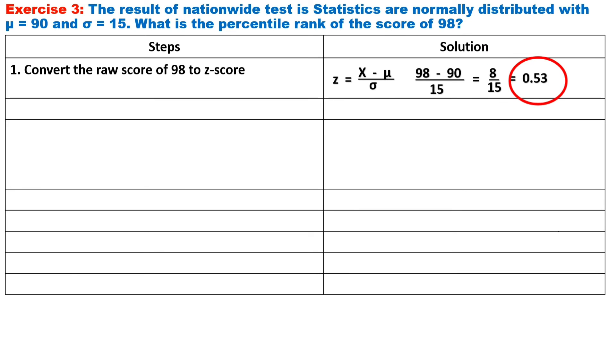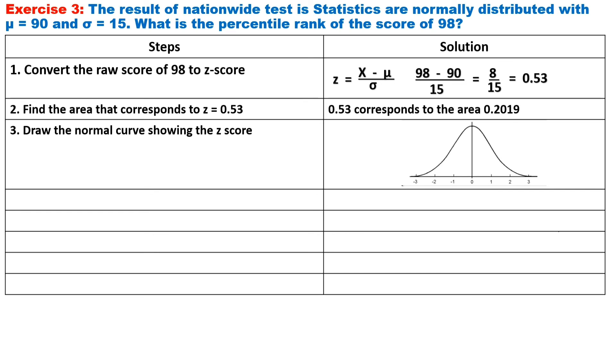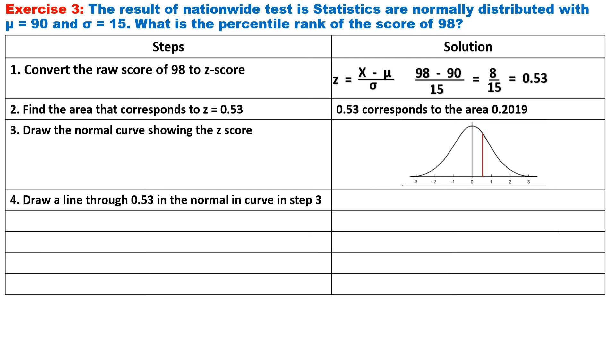Step two, find the area corresponds to Z equals 0.53 and it is 0.2019 from the Z-table. Step three, draw the normal curve showing the Z-scores. Step four, draw a line through 0.53 in the normal curve in step three.